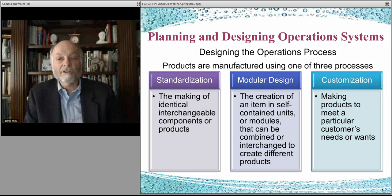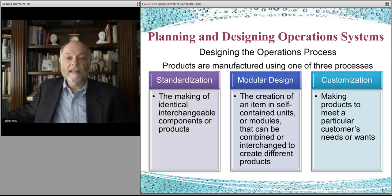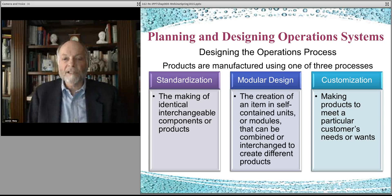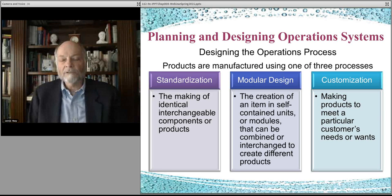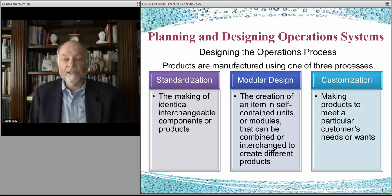You might also have something called a modular design, which means the product or service is set up so there's only a certain way it's done and pieces can be put together in different ways. The Subway process is a bit of a modular design — you have a number of types of breads that can be used to build the sandwich. You choose one of those designs and use it to build your sandwich. Other businesses have a stronger modular design; for example, with a computer, you have certain size screens and you might mix the screen with different amounts of memory, different technology, or a different keyboard, but by and large they're modular.